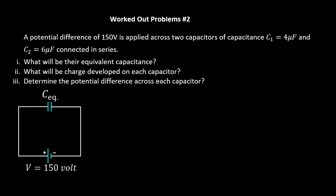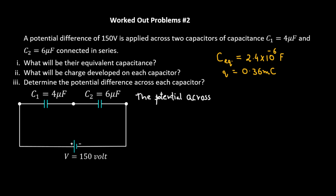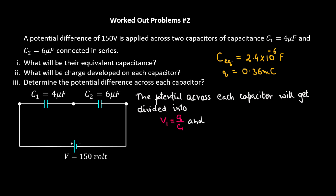What will be the charge developed on each capacitor? The key idea is that the charge developed across each capacitor is the same as the charge developed across the equivalent capacitor. Using Q equals C·V, we obtain Q equals C_equivalent times V. Substituting values: Q equals 2.4 times 10⁻⁶ multiplied by 150, giving 0.36 times 10⁻³, or 0.36 millicoulombs. The potential across each capacitor divides into V1 equals Q over C1 and V2 equals Q over C2.